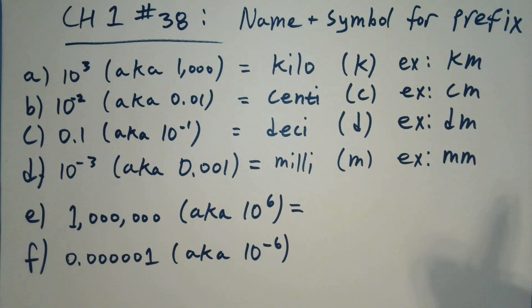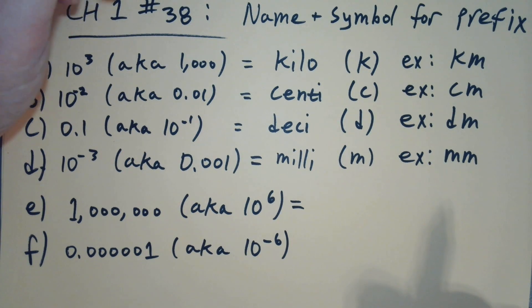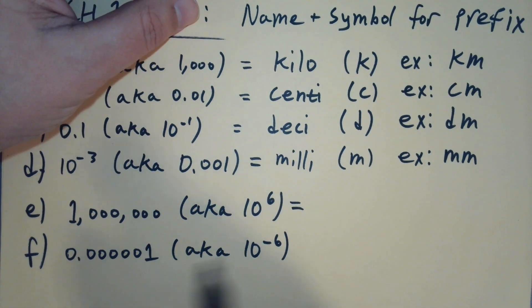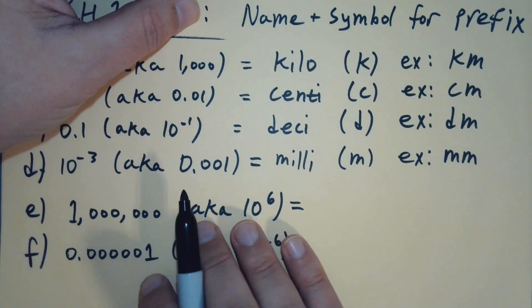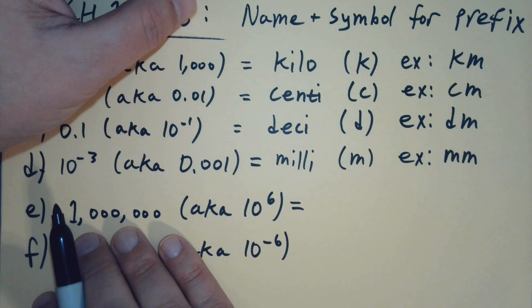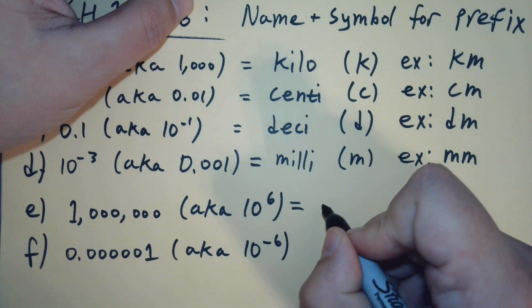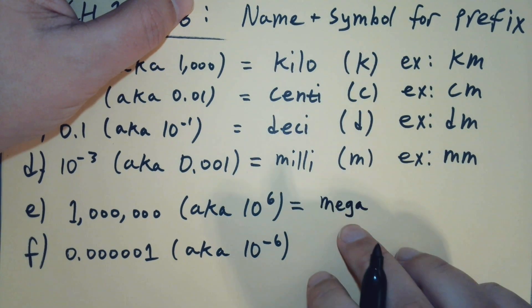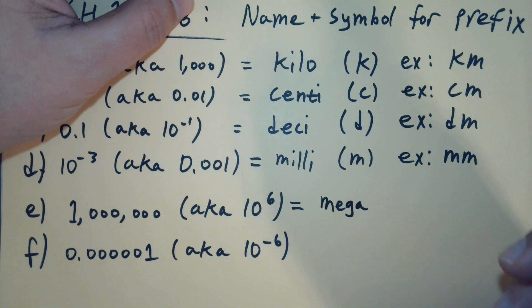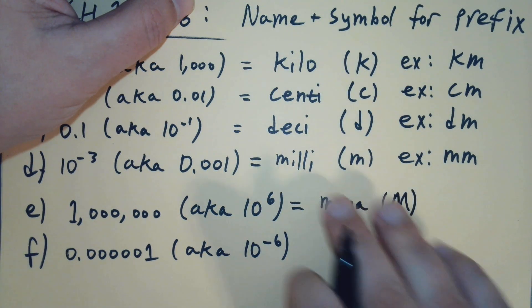You don't see that one much yet, but you never know in a couple years. So 1 million of our base units. So one of these equals 1 million of our base units. If I stack 1 million meters, what I get is a megameter. Our name is mega for the prefix, and then this one is a capital M.